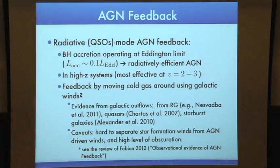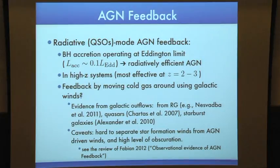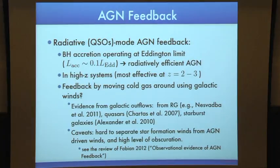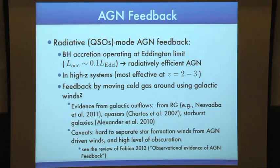First, there is a mode of accretion at high rates of the Eddington limit, which creates radiatively efficient AGN. This mode of accretion is most effective at high redshift, around redshift two or three, where the space density of quasars peaks. This mode creates luminous radiation in the form of winds or galactic outflows, found in radio galaxies, quasars, and starburst galaxies. The feedback here operates by moving cold gas using these galactic winds, though there are lots of caveats — separating star formation winds from AGN winds, et cetera.